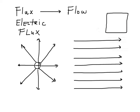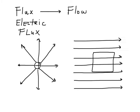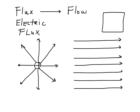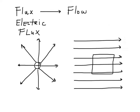It depends on the area of the flux detector or solar cell, and also on the orientation. If the flux lines are running along the x-axis and this square is in the xy-plane, none of the flux goes through it — it just goes right by. In order to get the maximum possible flux, you would rotate this square so it's facing into the flux, so field lines go in and out of the page.